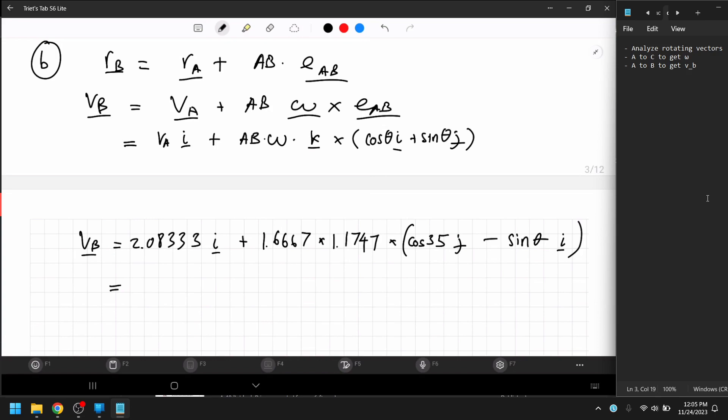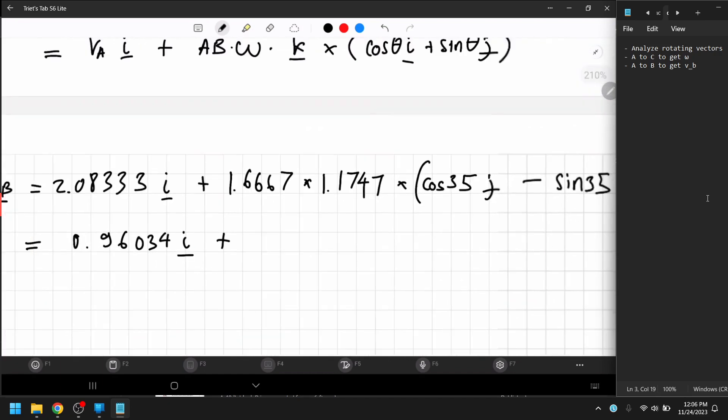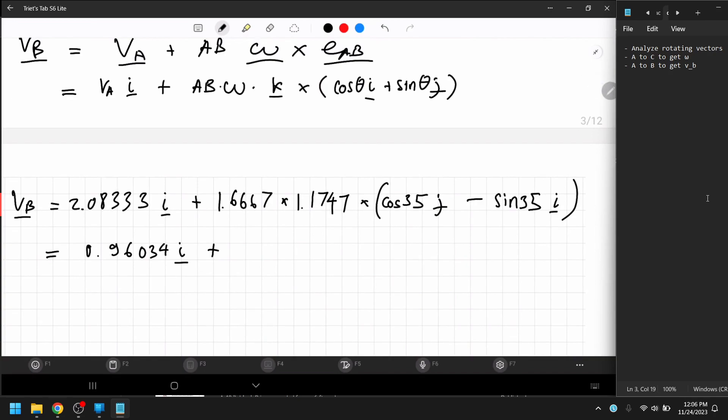i component, maybe minus, sin theta 35 by the way, point six six six seven, times 1.1747, times sin 35, and point nine six three four in the i component, five five six zero three eight, and the j component,